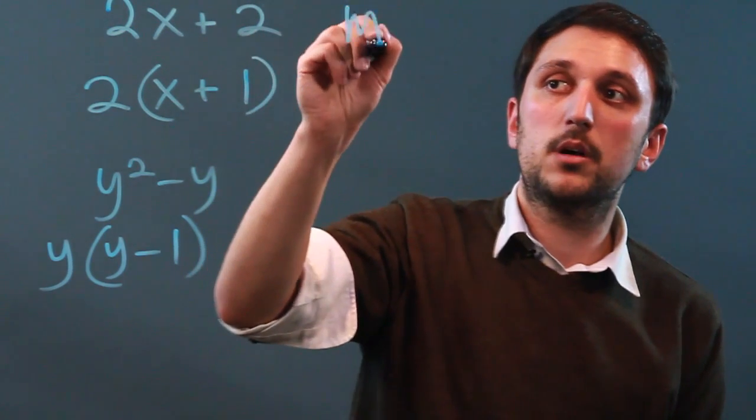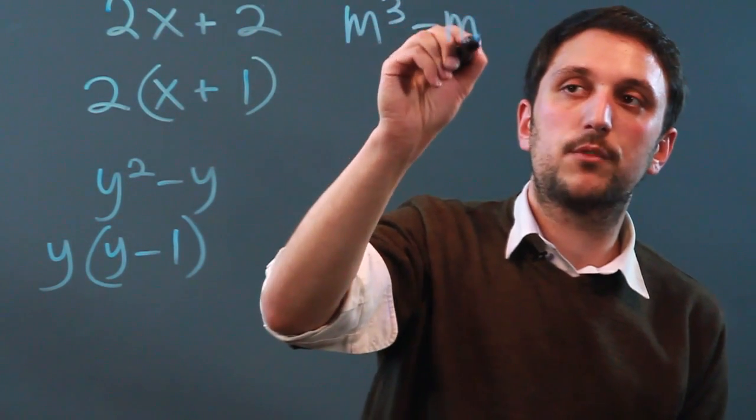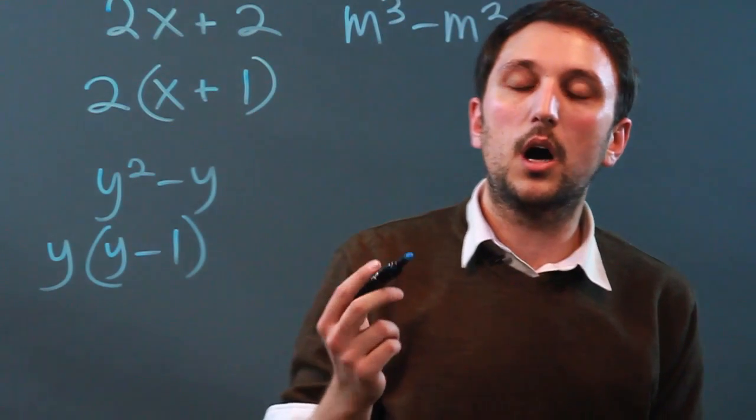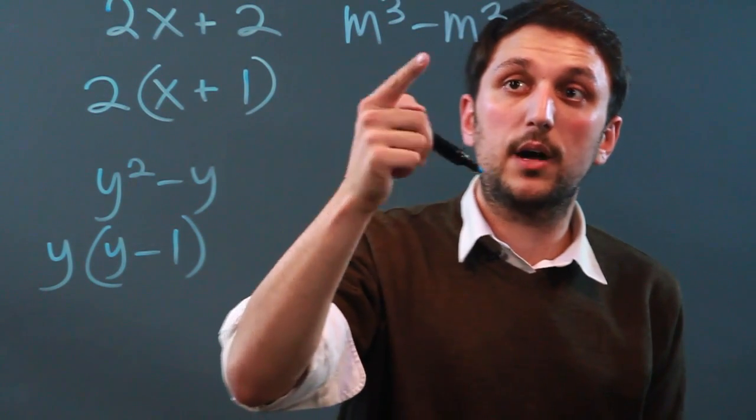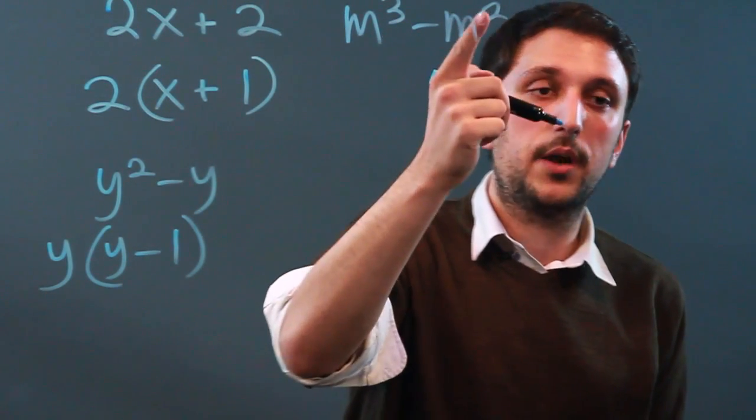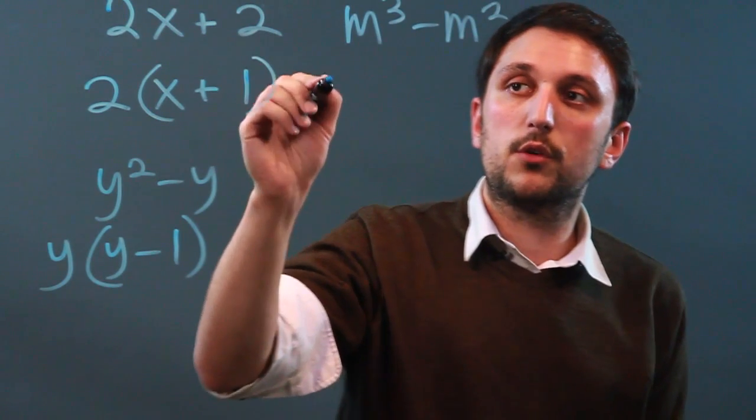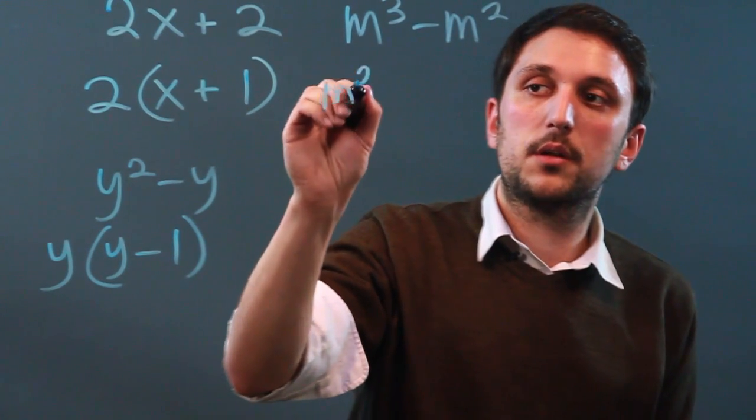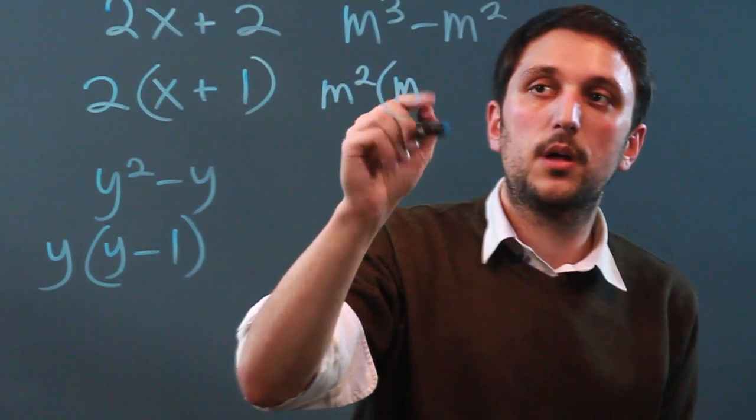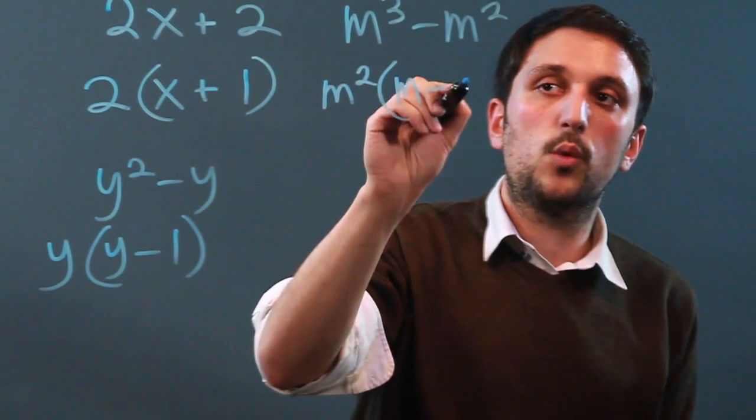If we did m cubed minus m squared, we pull out an m, but we actually can pull out an m squared from both. So we'd say m squared, parentheses, and all we have left here is an m, and all we have left here is a 1.